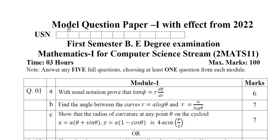Hello everyone, I welcome you all for SVK Tutorial. In this video, I am going to continue the solution for Model Question Paper 1 which has been effected from 2022 for the 1st semester BE degree examination with the subject title Mathematics for Computer Science Stream 1 with subject code DMATS101.